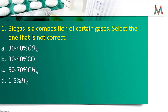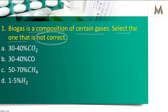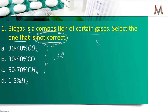पहला question इसने biogas से related रखा है। Question यह है: biogas की composition of certain gases — select the one that is NOT correct। पहले question को पढ़ो और 'NOT correct' को circle कर लो। NOT correct का मतलब यह है कि इसमें से एक option गलत होगा, बाकी तीन options सही होंगे।